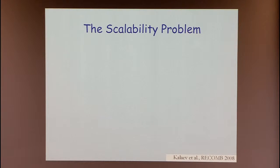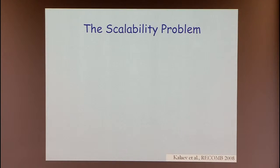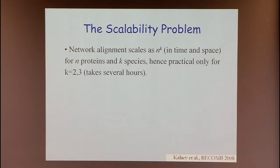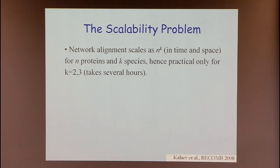The problem with multiple-species analysis is that the larger the number of species, the bigger the alignment graph gets — on the order of n to the k. This may be reasonable for k equals two or three, but nowadays we have maybe sixty networks, so we cannot hope to do the same thing for sixty species.